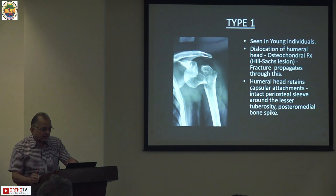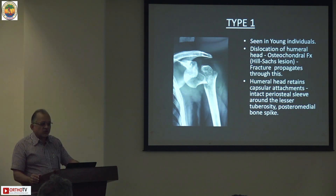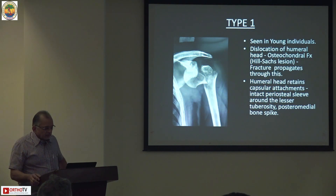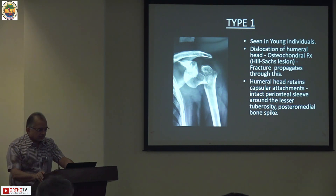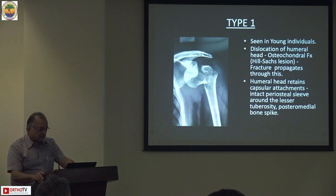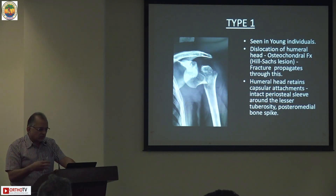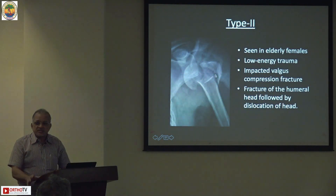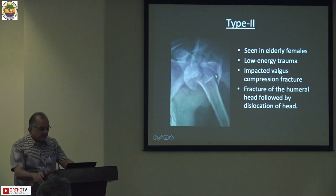Type 1 is seen in younger individuals where the dislocation of the humeral head involves an osteochondral fracture - that is the Hill-Sachs lesion - and the fracture propagates through this. The humeral head retains the capsular attachment, there is an intact periosteal sleeve around the lesser tuberosity which is always attached to the humeral head fragment, and there is usually a postero-medial spike.